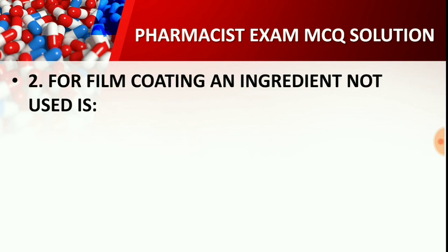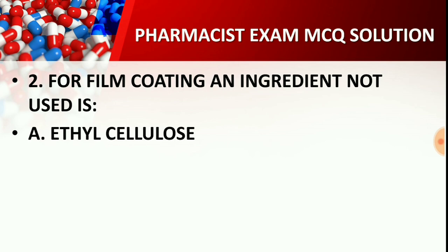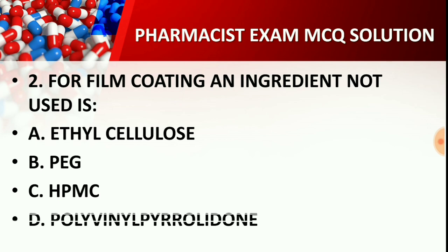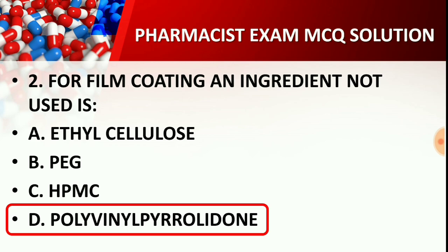Question number 2: Which ingredient is NOT used for film coating? Option A: Ethyl Cellulose, Option B: PEG, Option C: HPMC, Option D: Polyvinyl Pyrrolidone (PVP). The correct answer is D — PVP is not used for film coating. Ethyl Cellulose, PEG, and HPMC are used. PVP is used as a binder in tablet manufacturing to make granules of the drug and excipient.